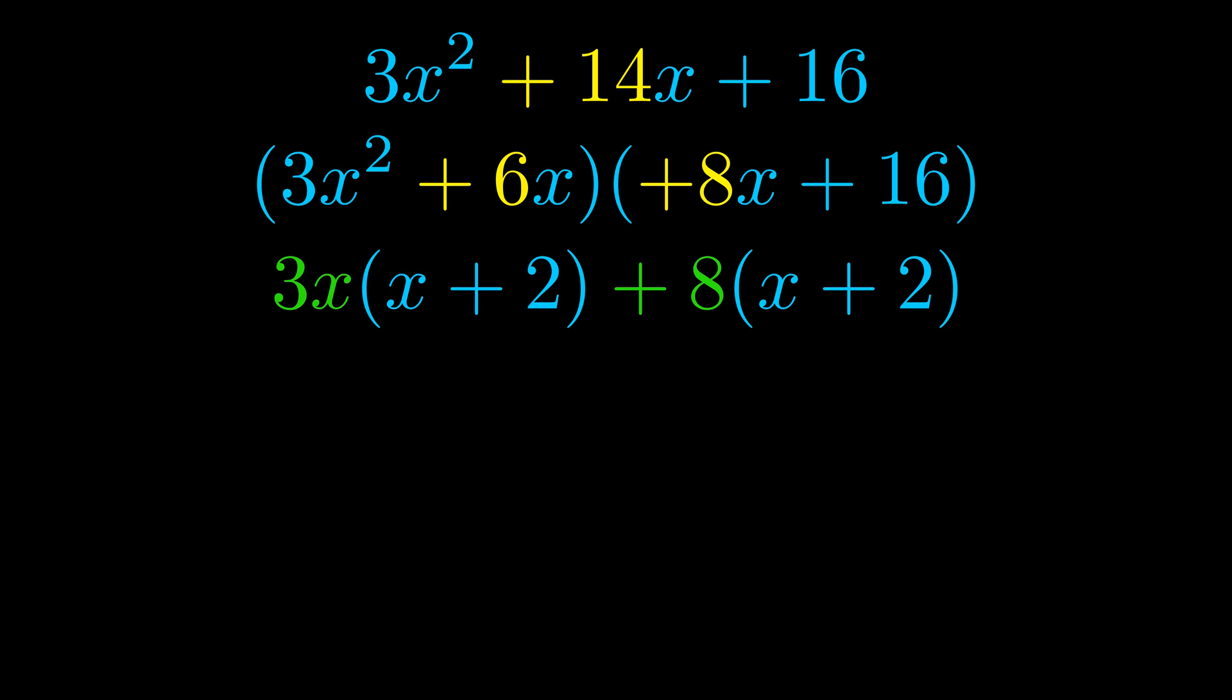Notice also how what remains inside the parentheses is the same in both cases. The blue values are the same. Those blue values will become one of our factors, and we will combine the two green values—the GCFs that we pulled out—to get the other one. And that is our fully factored equation.